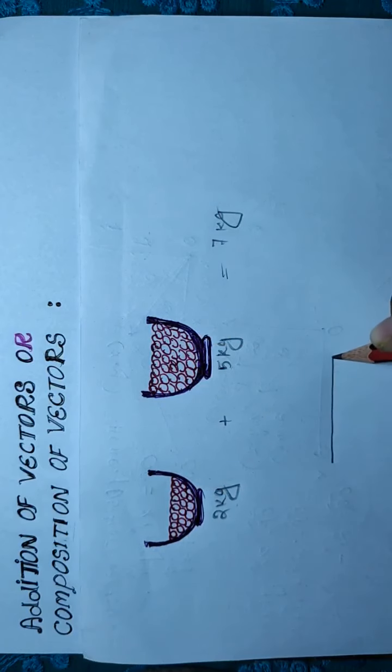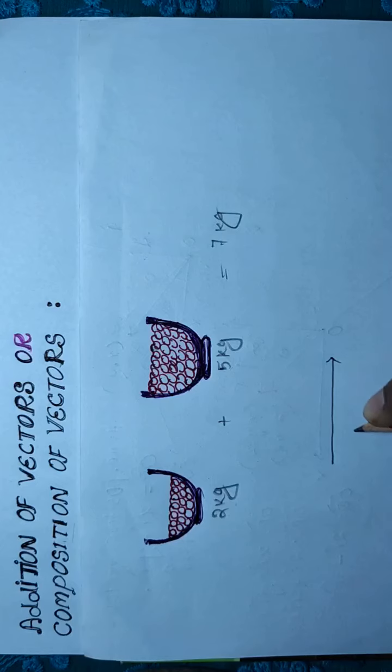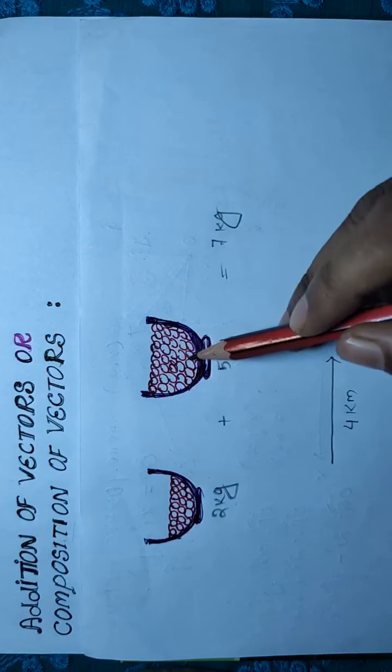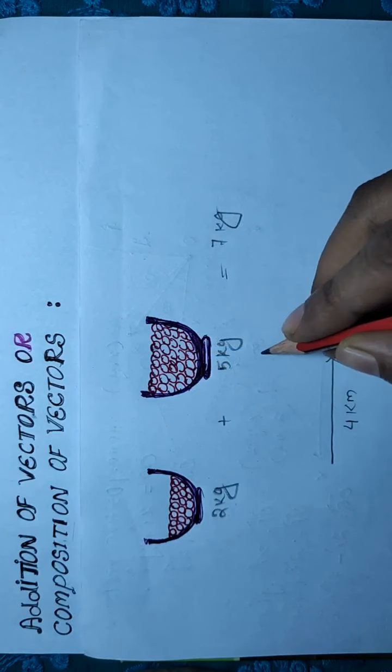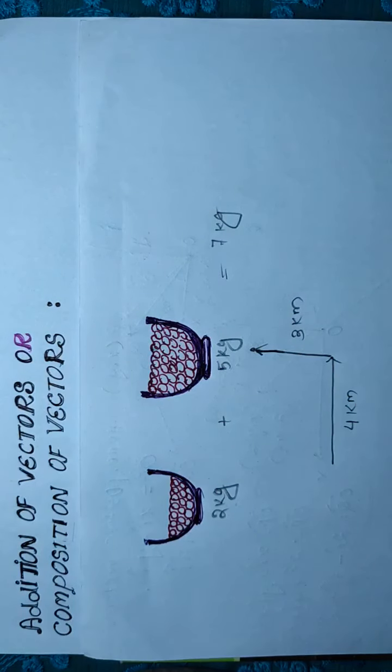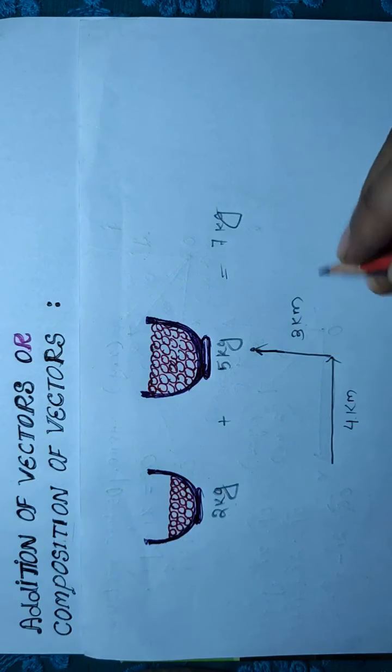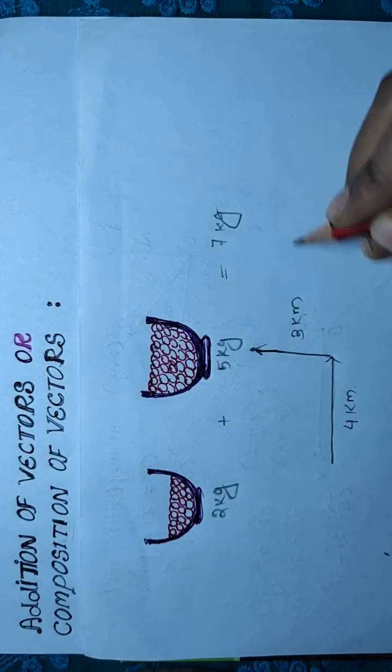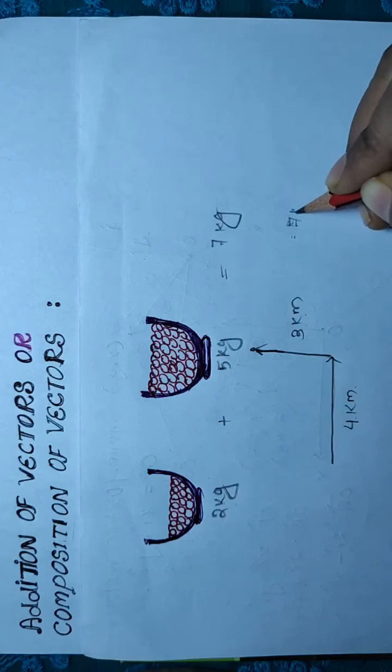But suppose you walk 4 kilometres in one direction to reach a market shop, and then from there you walk 3 kilometres in another direction to reach another shop. The total distance is 4 km plus 3 km, but the total displacement is different.